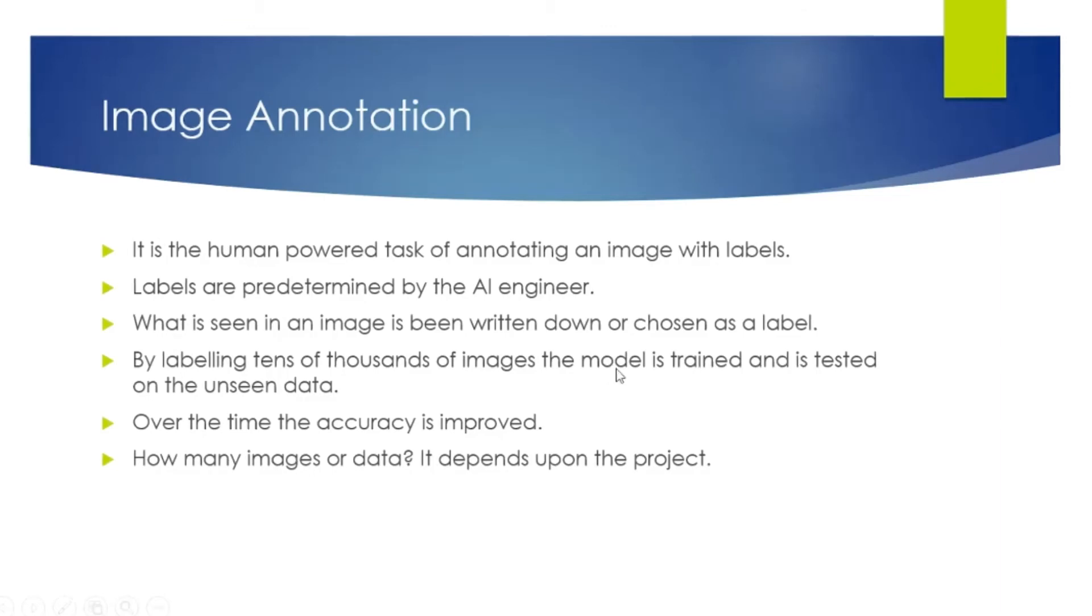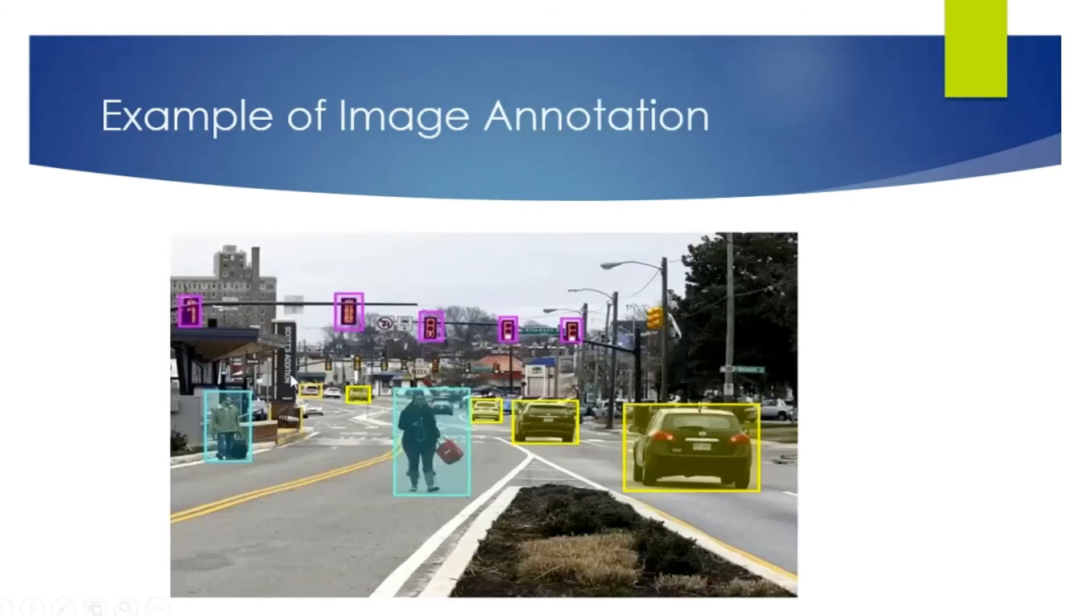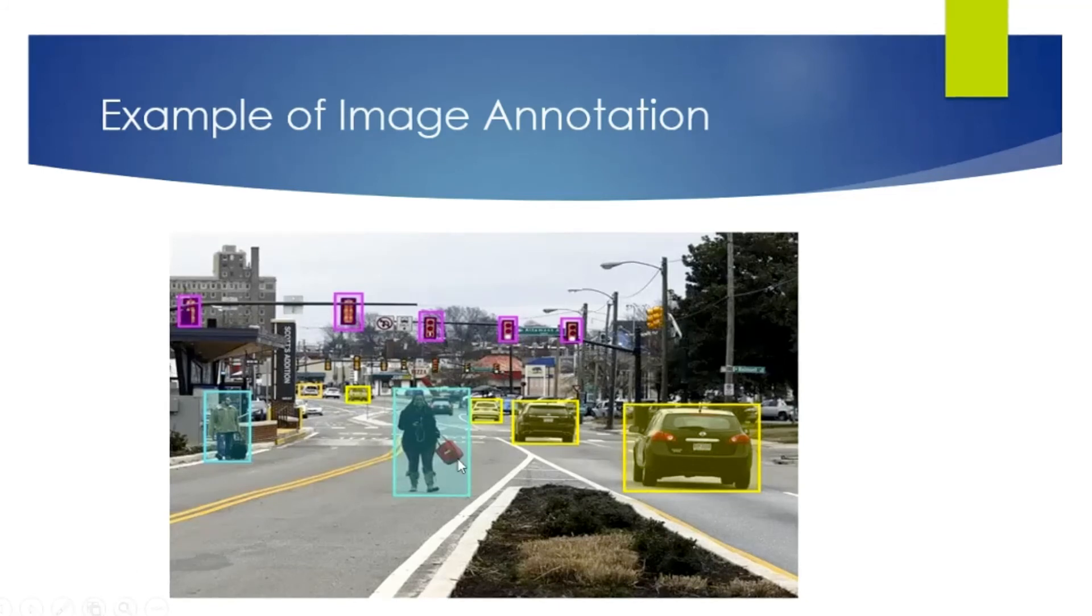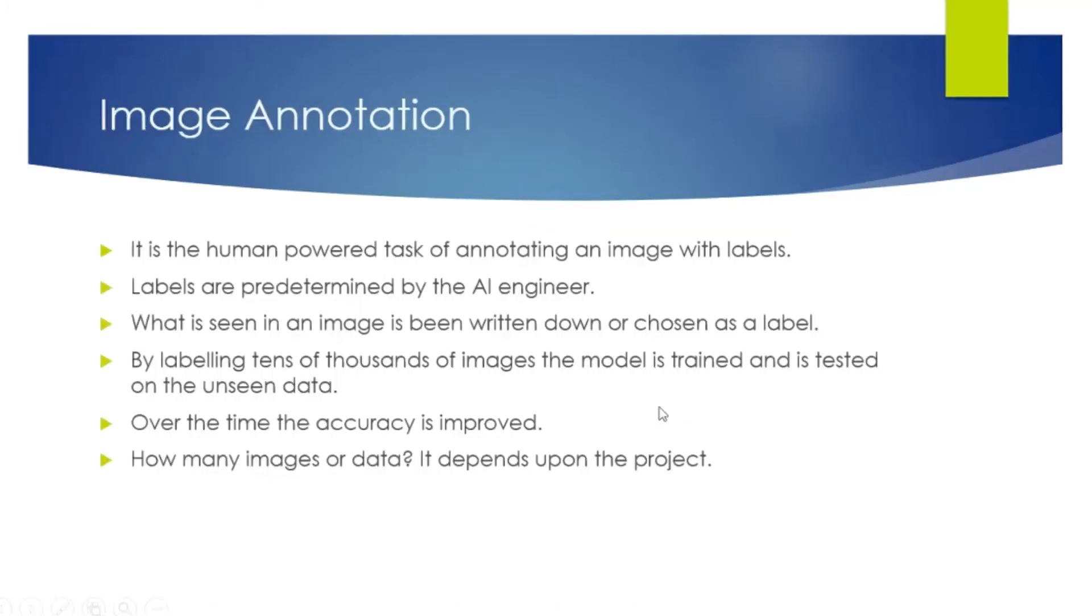When this has been trained, there's testing of this data. In testing, any unseen image or data would be given and the machine will correctly label them because it has been trained. This was an example of supervised machine learning.